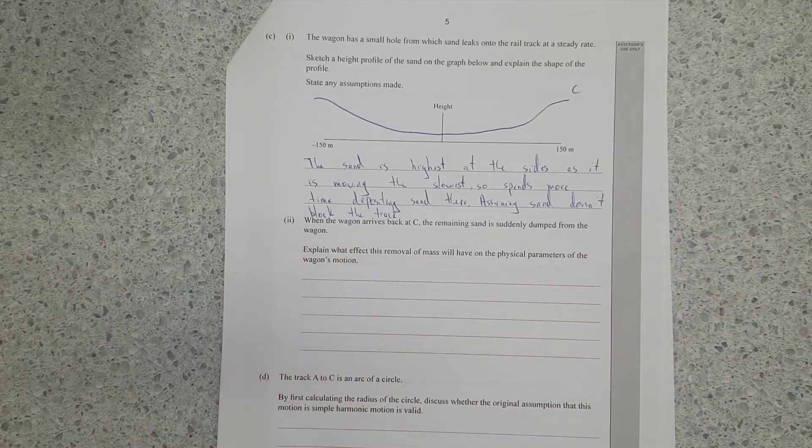When the wagon arrives back at C, the remaining sand is suddenly dumped from the wagon. Explain what effect this removal of mass will have on physical parameters of the wagon's motion. So this is like an age old physical question I love to ask my students. If you have a wagon, empty wagon, moving along a frictionless track, and it starts raining, and the wagon slowly gets filled up with water, what happens to the wagon? And the kids think about oh nothing, it'll slow down, it'll speed up, so on and so forth. The way to think about it: conservation of momentum and just plain old forces.